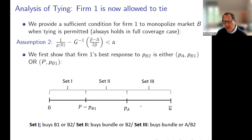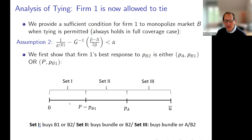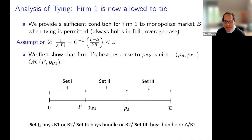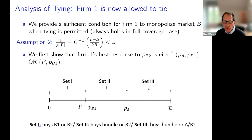If the firm is selling A separately, it's because the A-B2 combination is better than the bundle for set-three consumers. But if that's true, it's also true that for set two, B2 is better than the bundle; and for set one, B2 is better than B1. That means the only sales firm one is making are sales of product A to set three. But then the firm would be weakly better off doing independent pricing. That's how we see that one of these two options — independent pricing or pure bundling — is going to be a best response.